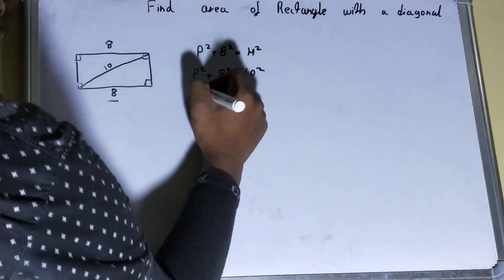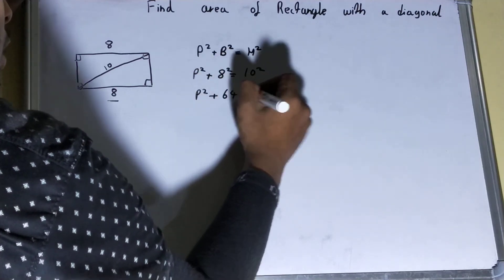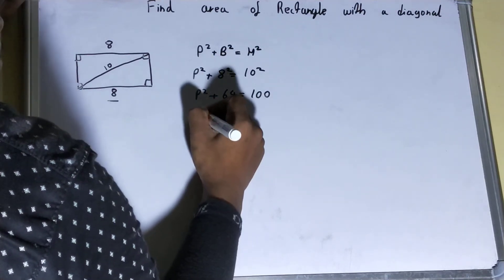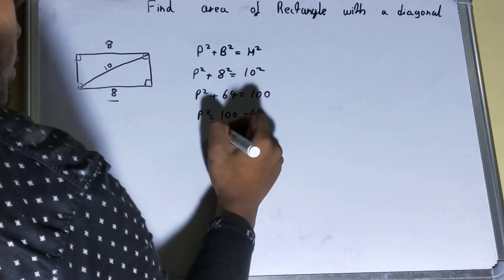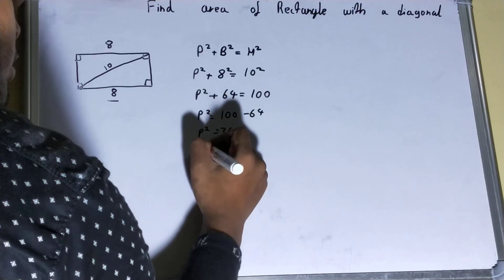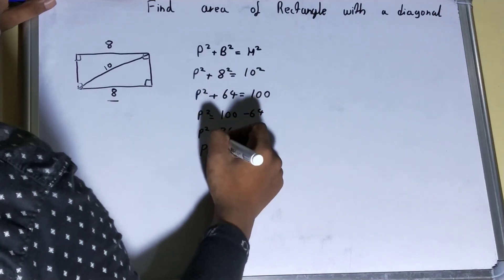Now if you further solve it, you'll get it as 8 squared is 64, 10 squared is 100, and p squared equals 100 minus 64, that will be 36. And your p will be 6, that is square root of 36.